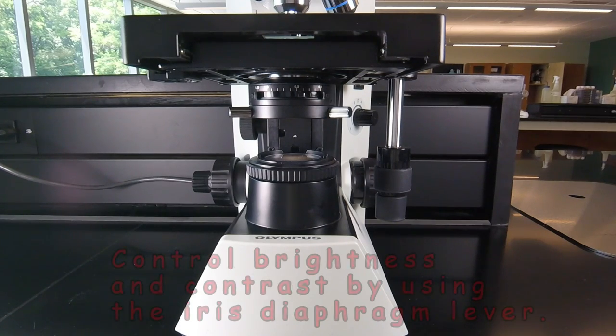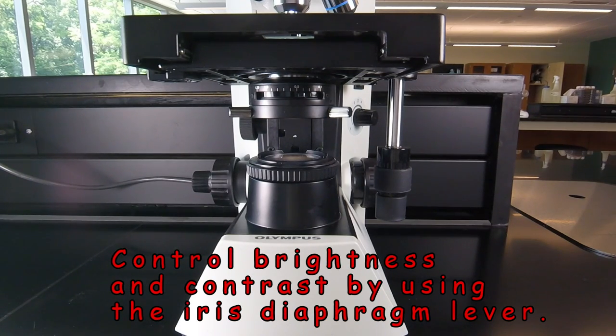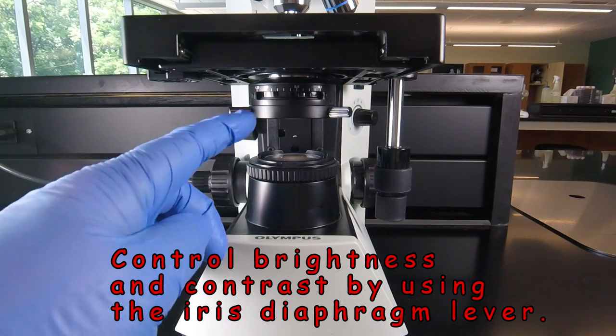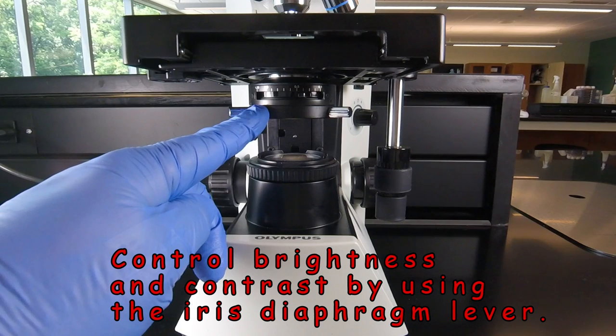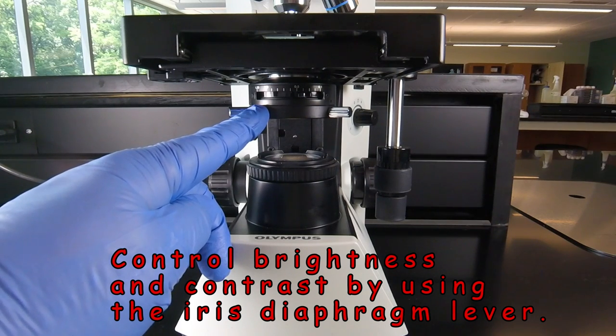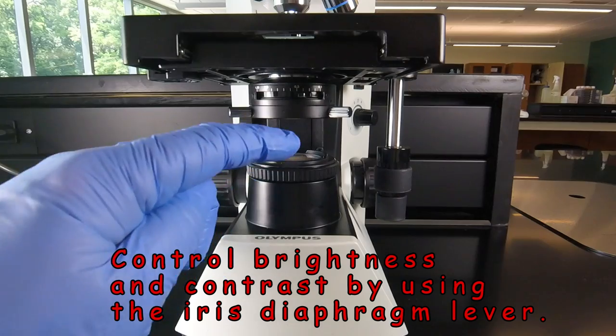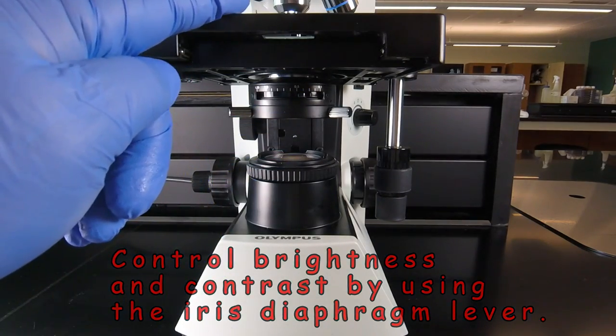Now what we use primarily to control the amount of light coming through the slide and up into the eyepieces is the iris diaphragm lever. This can be found underneath the stage. This is the iris diaphragm, which concentrates the lights from the light source and directs it up into the lens of the microscope.